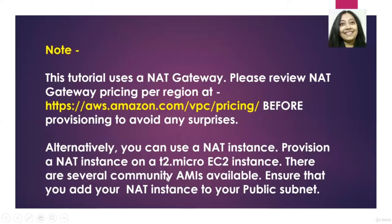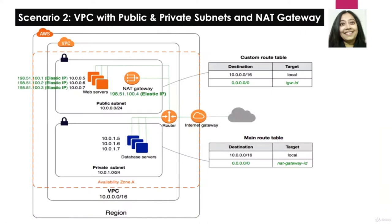With that said, let's continue and review the architecture diagram for Scenario 2 VPC creation. As the name says, we will be creating this VPC with a public and a private subnet, and we will also be adding a NAT gateway. Let's review this architecture diagram.